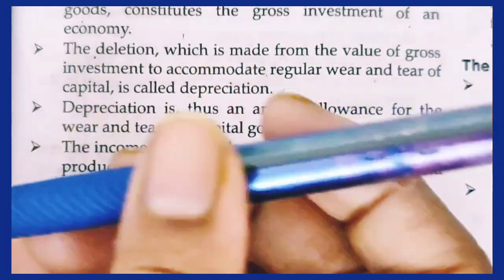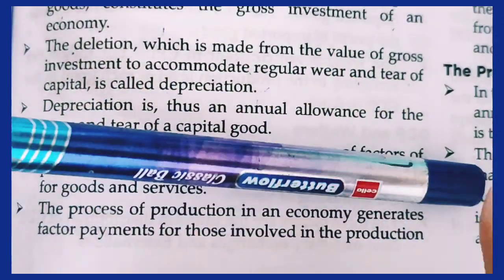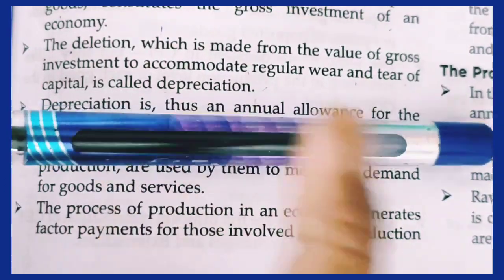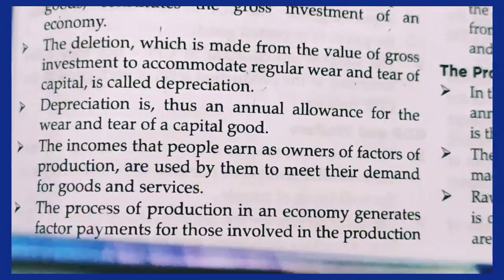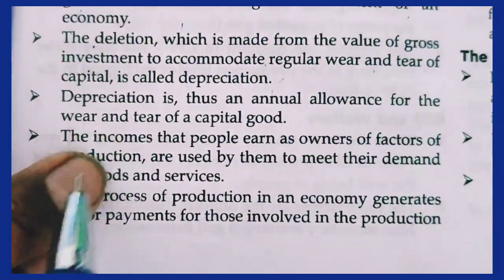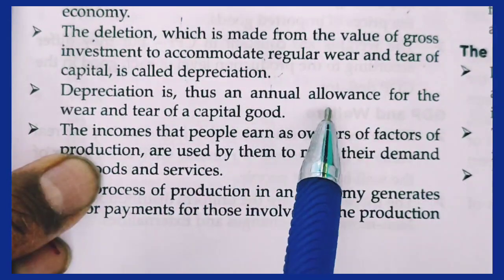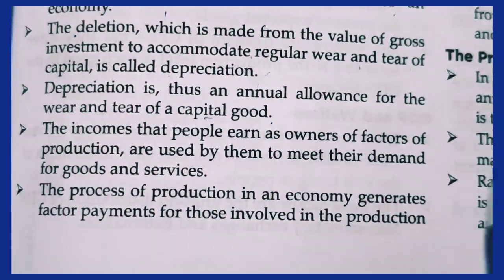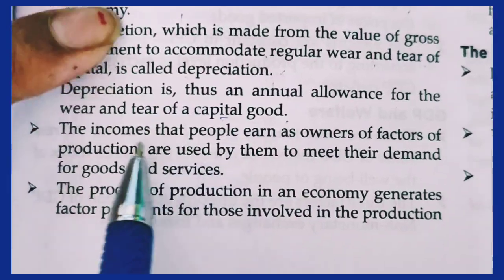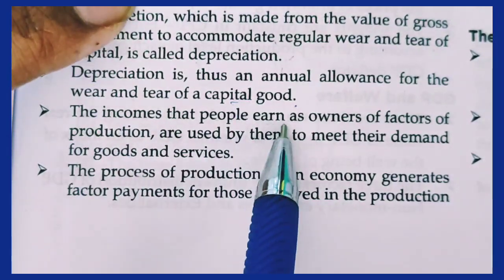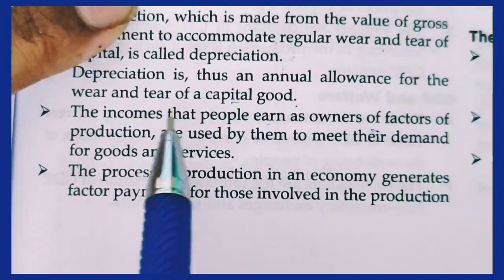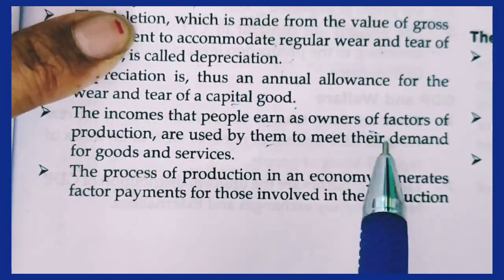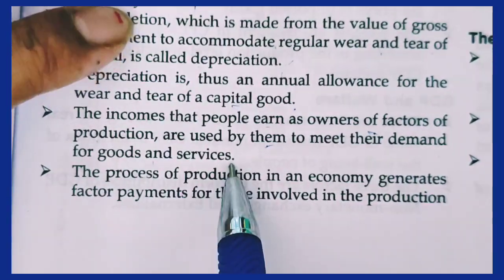Similarly, using a pen gradually depletes its ink — that is the concept of depreciation in everyday terms. Depreciation is an annual allowance for the wear and tear of capital goods. The income that people earn as owners of factors of production is used by them to meet their demands for goods and services.